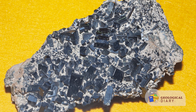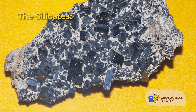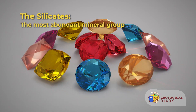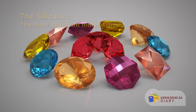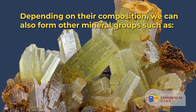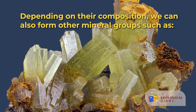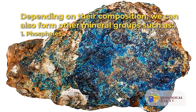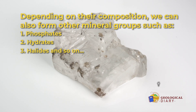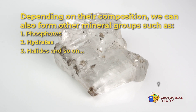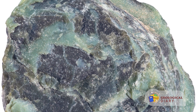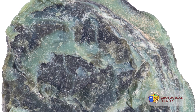When these elements combine they form the silicates. Although they are the most abundant mineral group, they are not the only one. Depending on their composition, we can also form other mineral groups such as the phosphates, hydrates, halites, and so on. Let's talk about each one of these mineral groups and discuss some of their internal structures and properties.